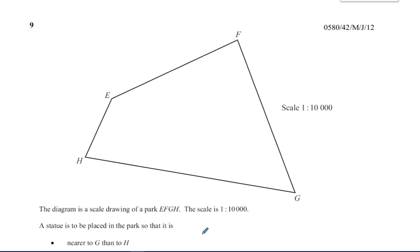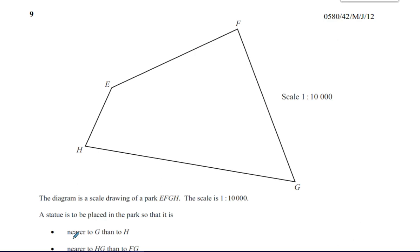Nearer to G than H — G is a fixed point, H is another fixed point. If it is to be nearer to G than H, we have to construct the perpendicular bisector of the line GH. Along the perpendicular bisector, all the points are equally distant from G as they are from H. So we need to construct the perpendicular bisector when you have this type of description.